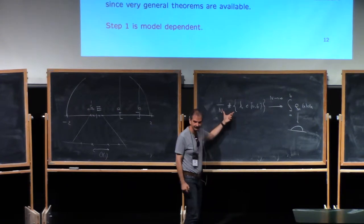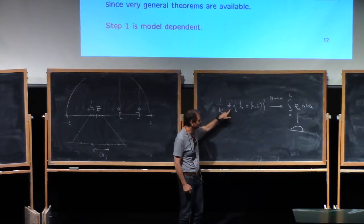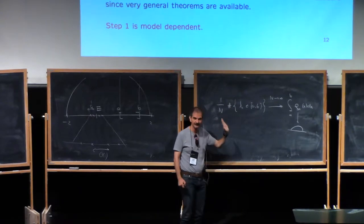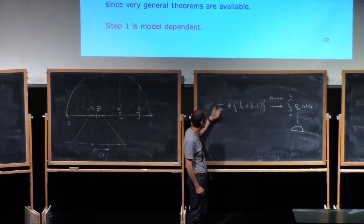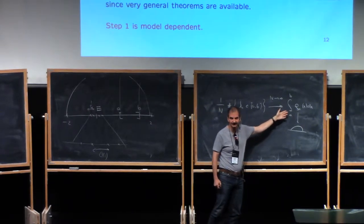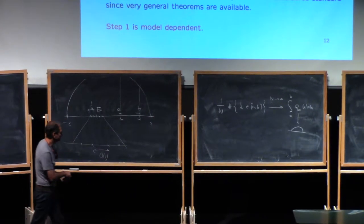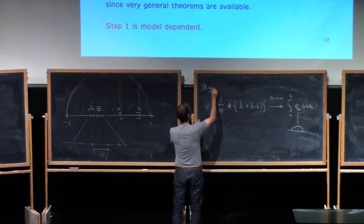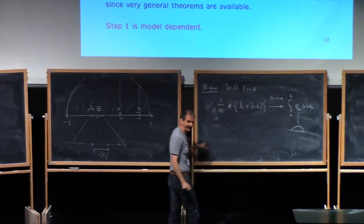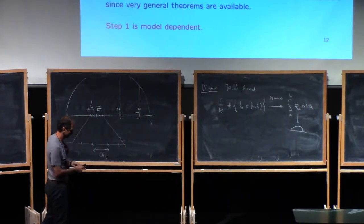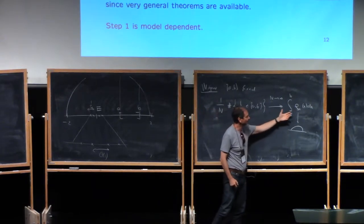Notice that this is a law of large numbers type result, because the left-hand side is still random. The number of eigenvalues in an interval fluctuates a little bit, but not too much — once you divide by 1/n you get a deterministic number. This holds when a and b are fixed — fixed means n-independent — and that's sufficient to conclude that the local empirical density weakly converges to the semicircle law.